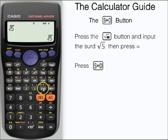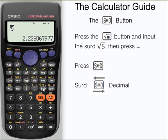If we press the S⇔D button then that changes it to a decimal approximation of √5. We can change between the two.